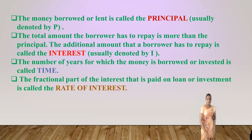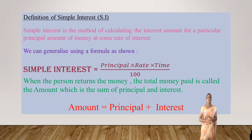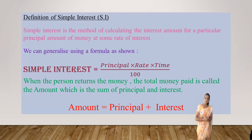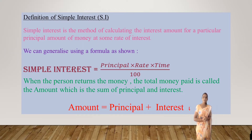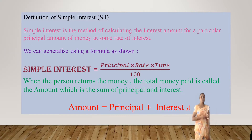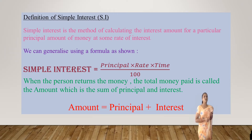Now we will see how to define simple interest. Simple interest is the method of calculating the interest amount for a particular principal amount of money at a given rate of interest. We can generalize simple interest using the formula: Simple Interest = (Principal × Rate × Time) / 100. When a person returns the money, the total money paid is called the amount, which is the sum of principal and interest: Amount = Principal + Interest.